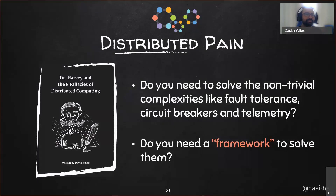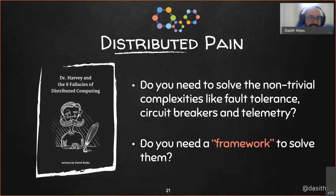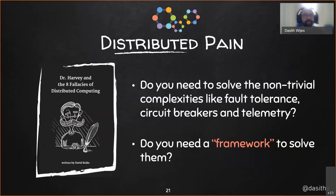What does this mean for teams building distributed systems and microservices? Solving network layer problems in a distributed system requires expert-level knowledge. It's easy to make false assumptions about the network layer in a distributed system. This is an area where you definitely don't want to reinvent the wheel, but you also don't need to rely on a framework for this either. So what's the solution?